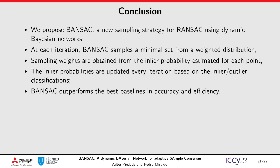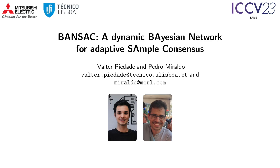To conclude, in this work we propose a new sampling strategy for RANSAC. Instead of random sampling, we sample data points based on their inlier probability. These probabilities are modeled by a dynamic Bayesian network and are updated every iteration based on the inlier or outlier classifications. Thank you for attending the presentation. For any questions, feel free to contact us.